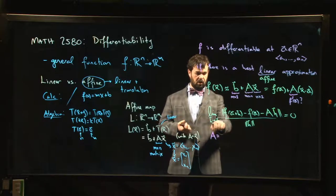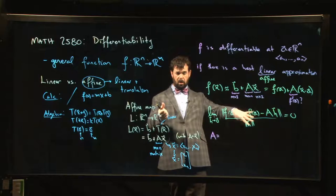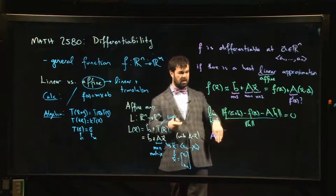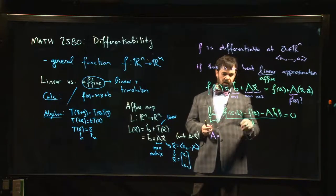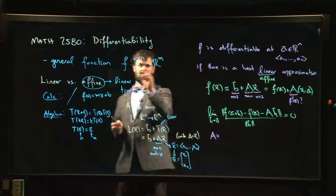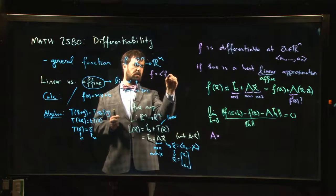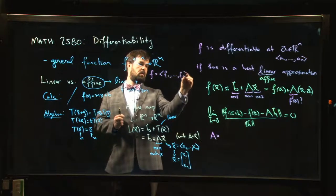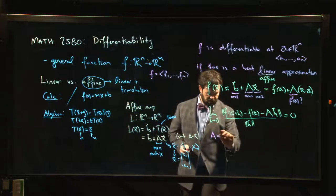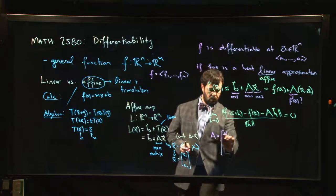You can do the same thing here. You can let h go to 0, where maybe you set the first coordinate going to 0 and all the other ones are already 0. So you choose one axis at a time, approach along the different coordinate axes, n of them, and you see what you get. So if f goes to R^m, then I should really think of f as a vector, like f_1 up to f_m. It has some components.